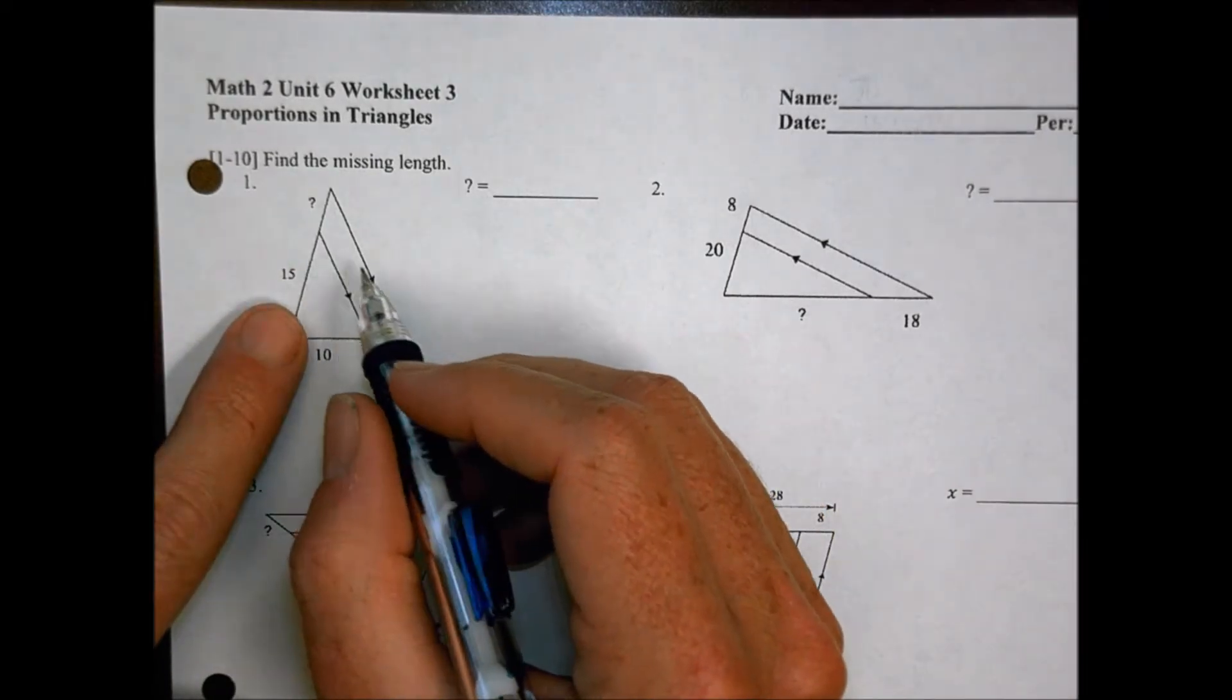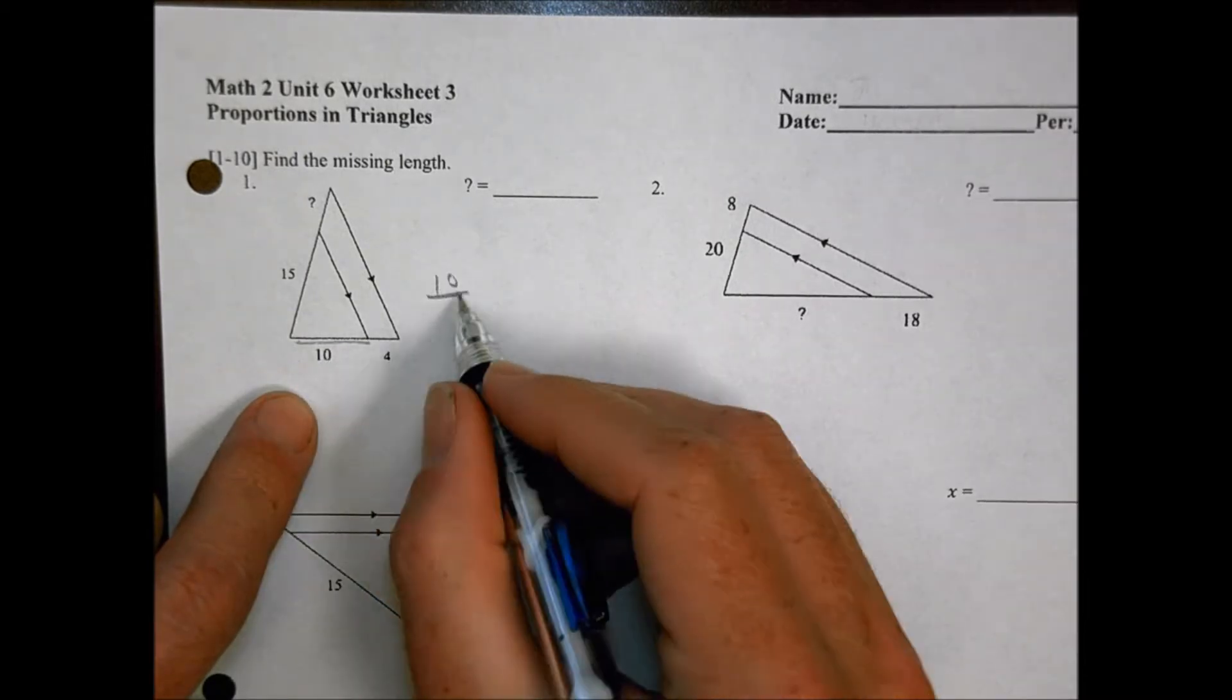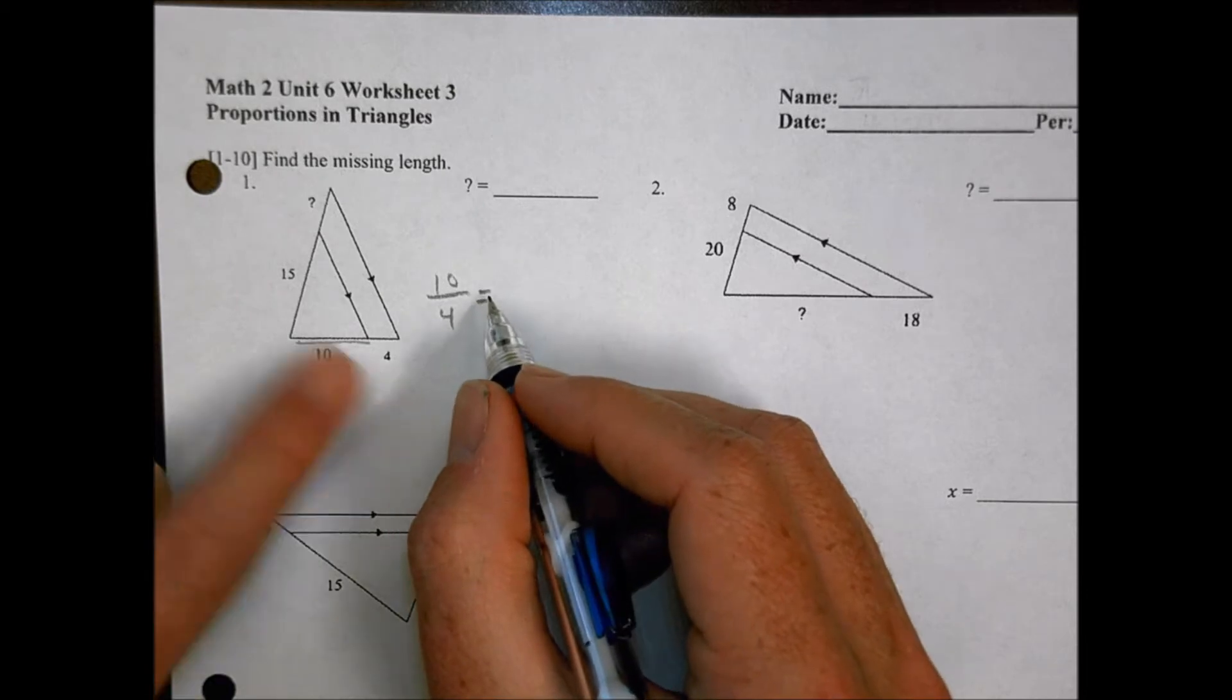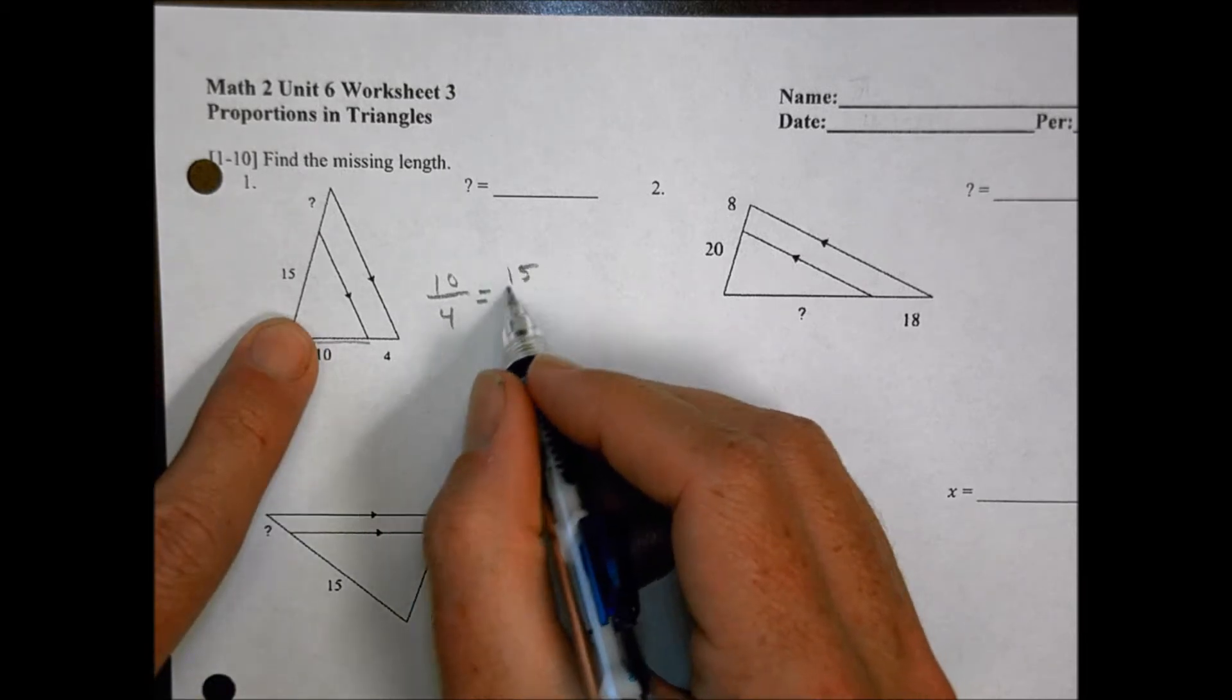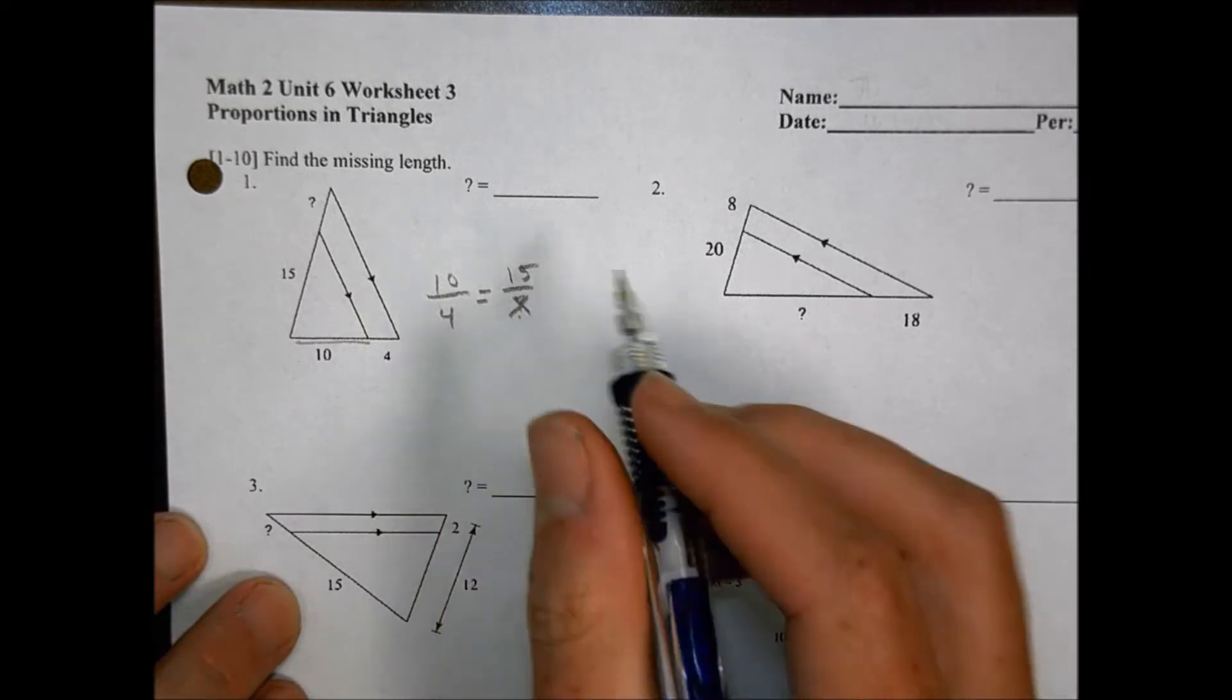We're going to start this one off by saying that I have 10 on the short side over 4 on this extra part here, and we're going to make that equal to the 15 on this side over the I don't know part on that side. We can call that x if we chose to.